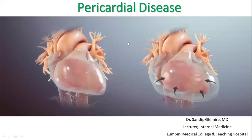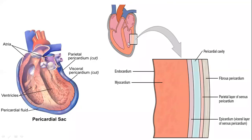Today we'll be talking about pericardial diseases. The pericardium is a double-layered sac which surrounds the heart. It is made up of two layers — the parietal layer and the visceral layer. There is a space between these two layers which is filled by a small amount of fluid known as pericardial fluid.